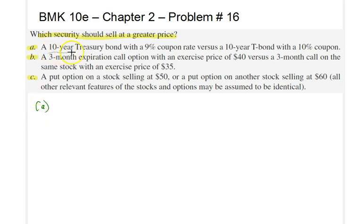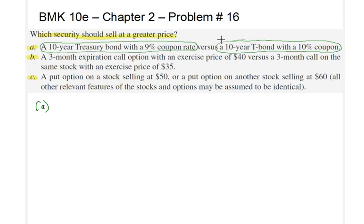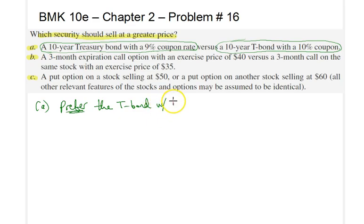We would like to compare a 10-year Treasury bond which offers a 9% coupon rate with another Treasury bond, also 10-year maturity, but with a 10% coupon rate. The 10-year Treasury bond with the higher coupon rate will sell for a higher price because bondholders over this 10-year period will earn higher interest payments. Therefore, we prefer the Treasury bond with the 10% coupon rate.